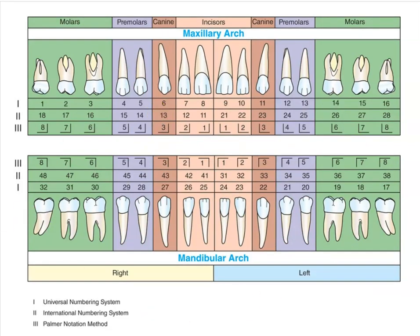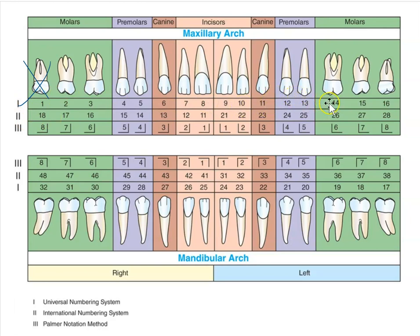The same system applies for permanent teeth. With universal numbering, you start with 1 and go clockwise to 32, and every tooth has its own number. With FDI for permanent teeth, we have quadrants 1, 2, 3, and 4. The first number is the quadrant, the second is the tooth number. Important: with FDI, we say '2, 6' or '2, 5' — not '26' or '25' — that's how we differentiate it from universal numbering.